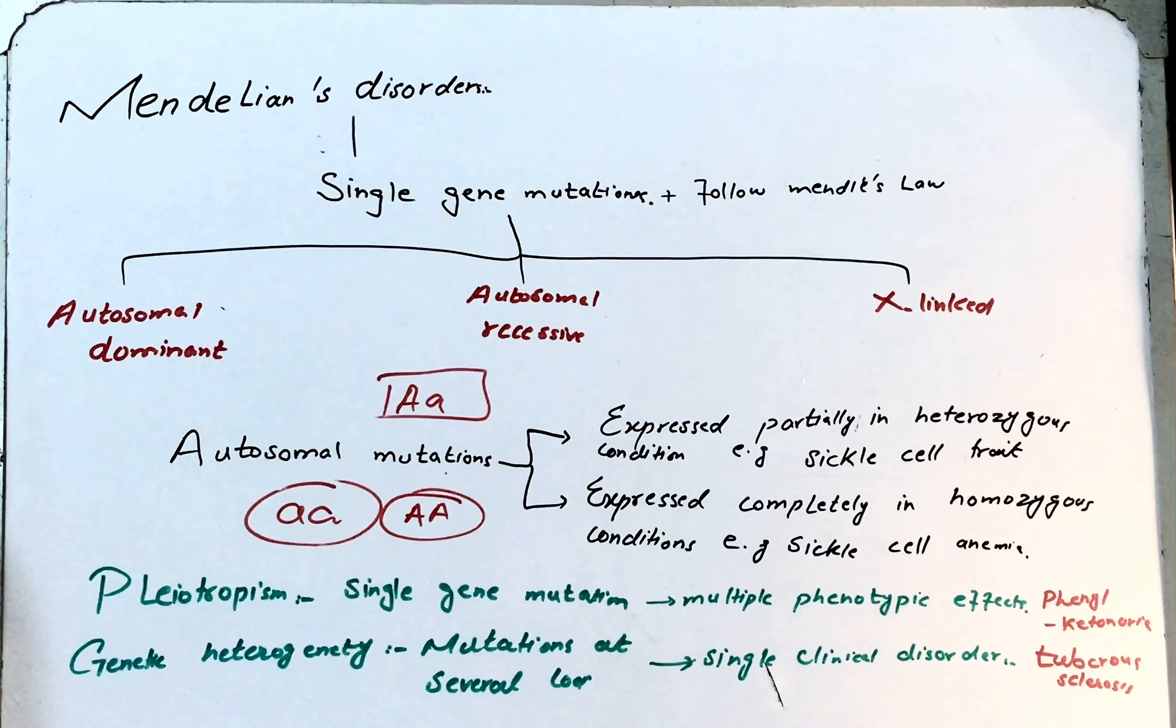What happens in sickle cell anemia? In sickle cell anemia, there is substitution of hemoglobin A by hemoglobin S. When an individual is homozygous for the mutant gene, then all the hemoglobin will be of type hemoglobin S and the disorder will express completely.